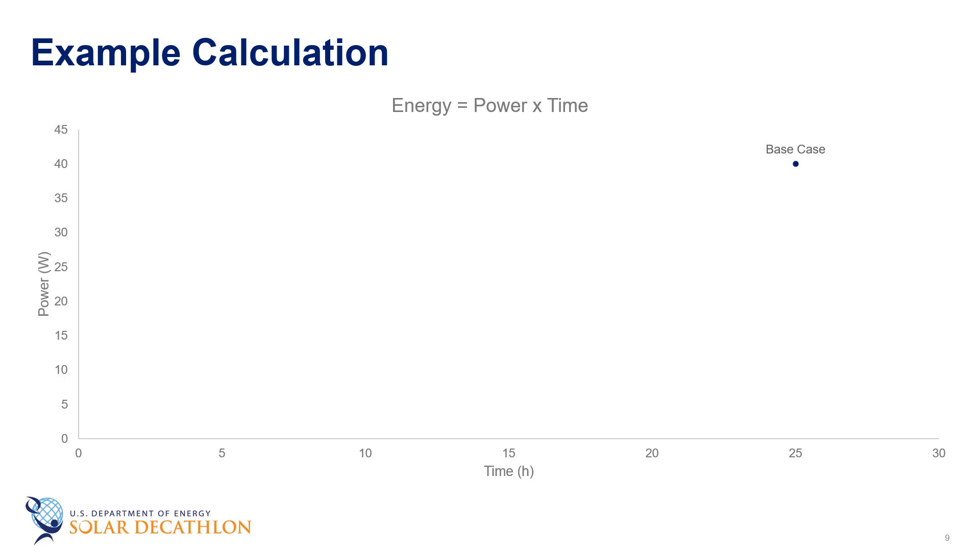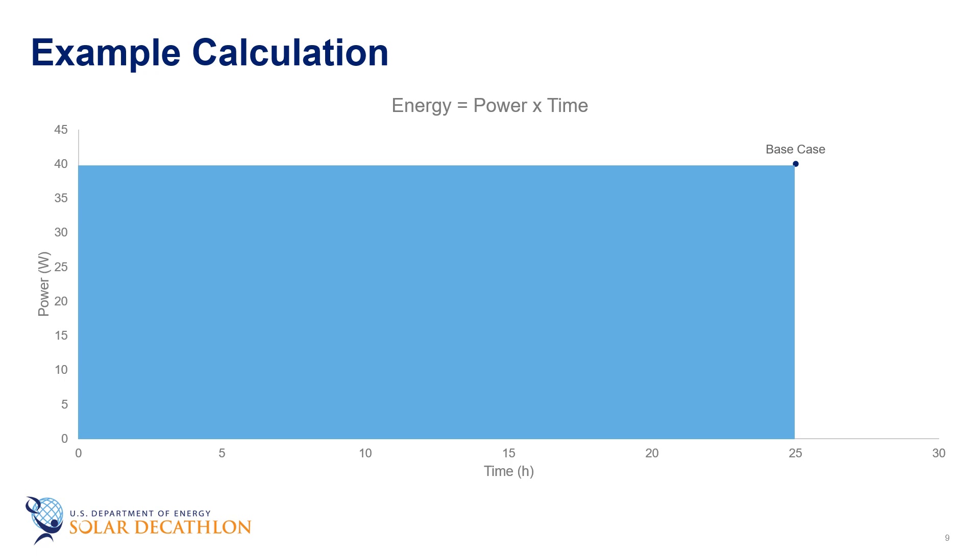So let's walk through this example graphically. Our base case is plotted on this graph here. You'll see that this point lines up with 40 watts on the y-axis and 25 hours on the x-axis. And as we now know, energy equals power times time. So the area of this rectangle can be thought of as the amount of energy this light bulb is using because the formula for a rectangle's area is length times width. And in this case, the length and the width of the rectangle correspond with the time and the power values on the x and y-axis. As a reminder of our base case calculation, we'll show the math one more time before moving on to look at how you can save energy compared to this scenario.